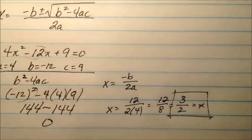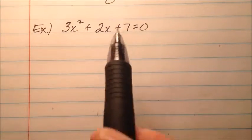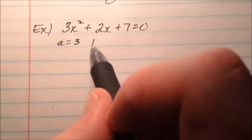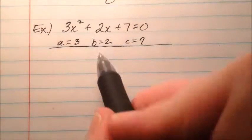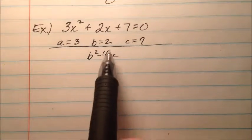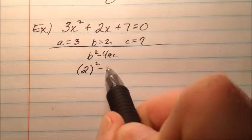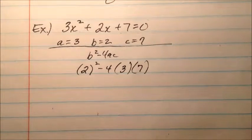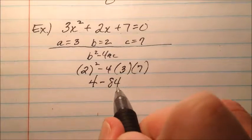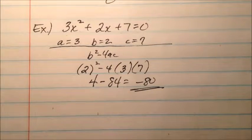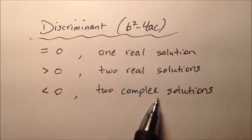So the only solution to that quadratic equation is 3 halves. In the second example, 3x squared plus 2x plus 7 equals zero, so a equals 3, b equals 2, and c equals 7. Plugging into b squared minus 4ac: 2 squared minus 4 times 3 times 7, which is 4 minus 84, giving negative 80. Since it's less than zero, we'll have two complex solutions.